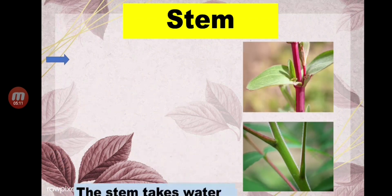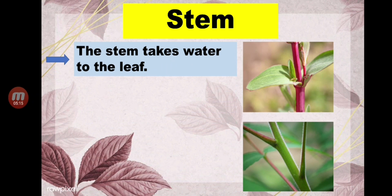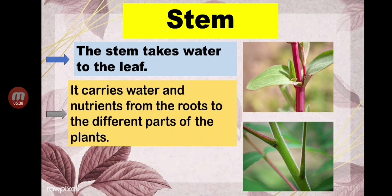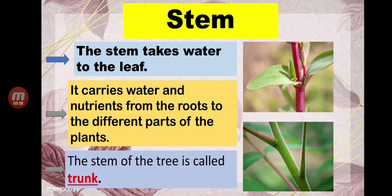Now let's proceed to the stem. What is a stem? The stem takes water to the leaf. After the roots take water from the soil going to the stem, the stem brings the water to the leaf. The stem also carries water and nutrients from the roots to different parts of the plant, distributing them throughout.